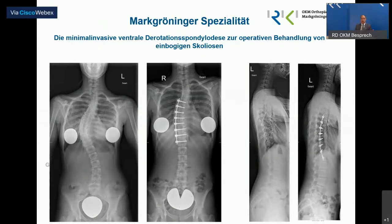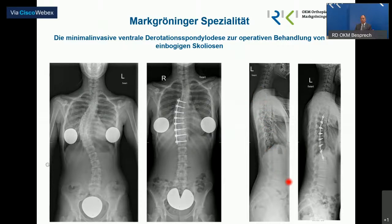Dann haben wir noch das, was ich die Gröninger Spezialität genannt habe: von der Seite operieren über einen relativ kurzen Schnitt. Hier ist ein Beispiel mit deutlicher Krümmung. Man sieht, die Schrauben sind von der Seite eingebracht, in dem Fall von der rechten Seite. Vorher ist der Rücken flach, nachher gibt es ein normales physiologisches Seitprofil. Damit kann man nicht nur den Rippenbuckel wegdrehen und die Seitverkrümmung korrigieren, sondern auch wieder ein normales Seitprofil erzielen.